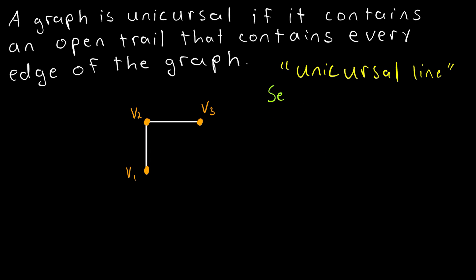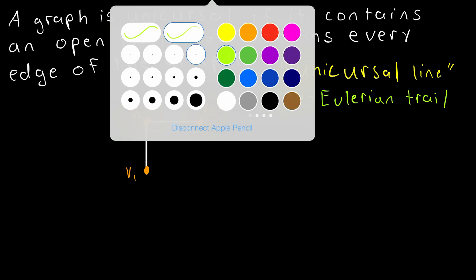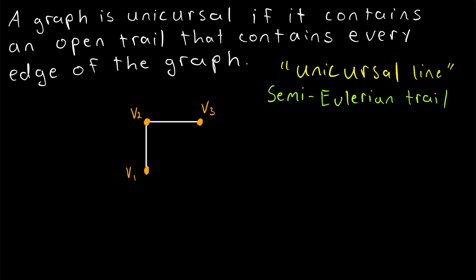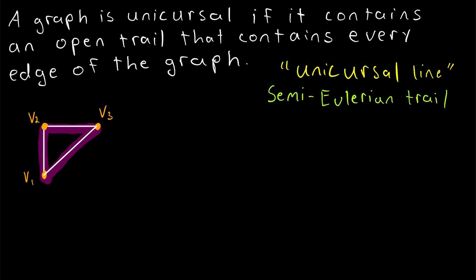These unicursal lines are also sometimes called semi-Eulerian trails. You might notice that the idea of a unicursal line is pretty similar to Eulerian circuits. An Eulerian circuit is a circuit in a graph that contains every edge of the graph, like this circuit in this graph that I'm highlighting in purple.